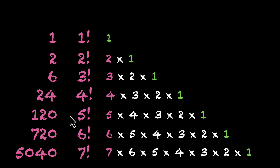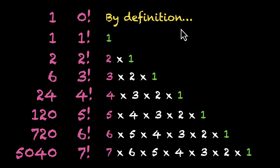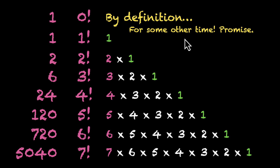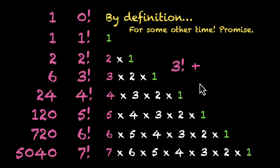Those are the values for the first 7 factorials — I'm not asking you to memorize them, just to practice calculating them. Quick note: 0 factorial is by definition 1, and I'll make a video on that another time. Also notice this sequence grows very, very fast — at 4 we're at just 24, and at 7 we've already crossed 5000. Lastly, simple laws of addition don't work for factorials: you can't add 3! and 4! to get 7!. 3! is 6, 4! is 24, so adding them gives 30, not 5040.